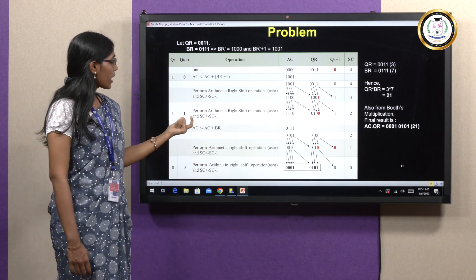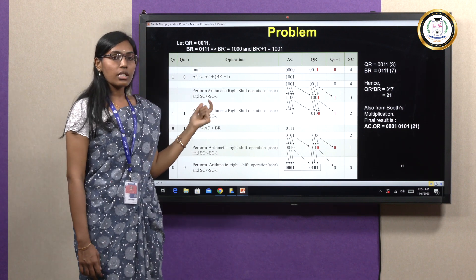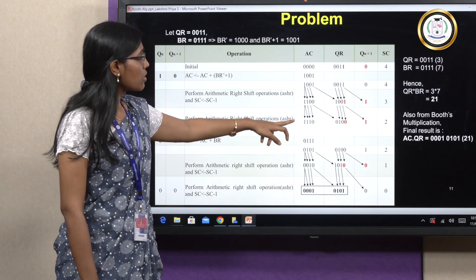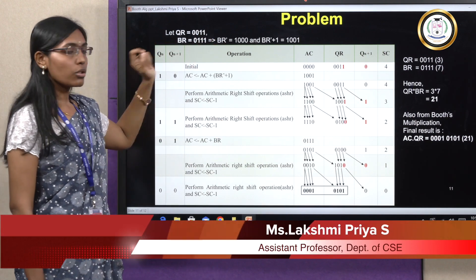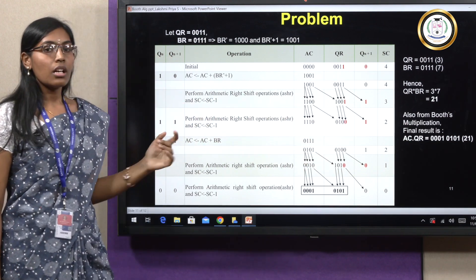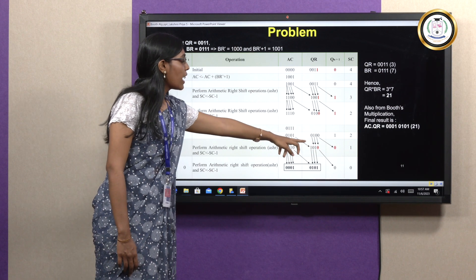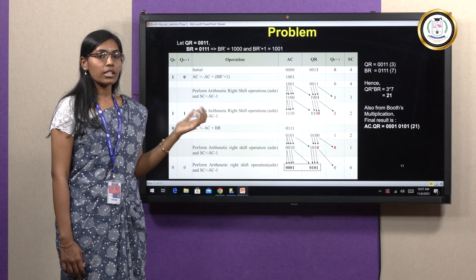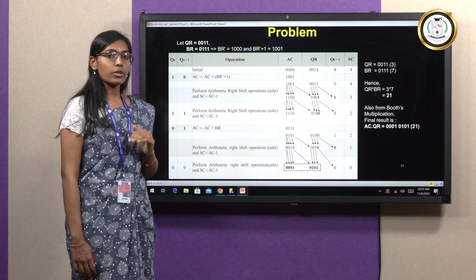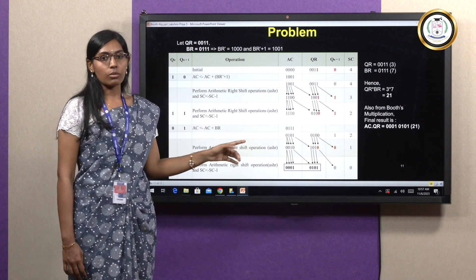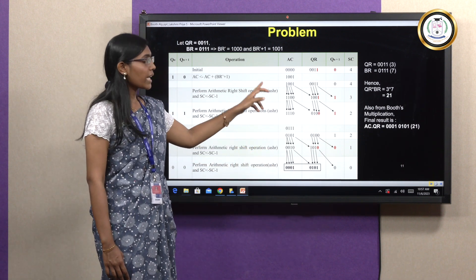Step 3: The last bit of QR = 0 and QN+1 = 1. Since QN=0, QN+1=1, add AC + BR (not 2's complement, just BR = 0111). AC is updated accordingly. Step 4: Check last bit of QR and QN+1 — both are 0. Since it is 0,0 perform arithmetic shift right, then decrement SC. SC reaches 0, so the operation stops.